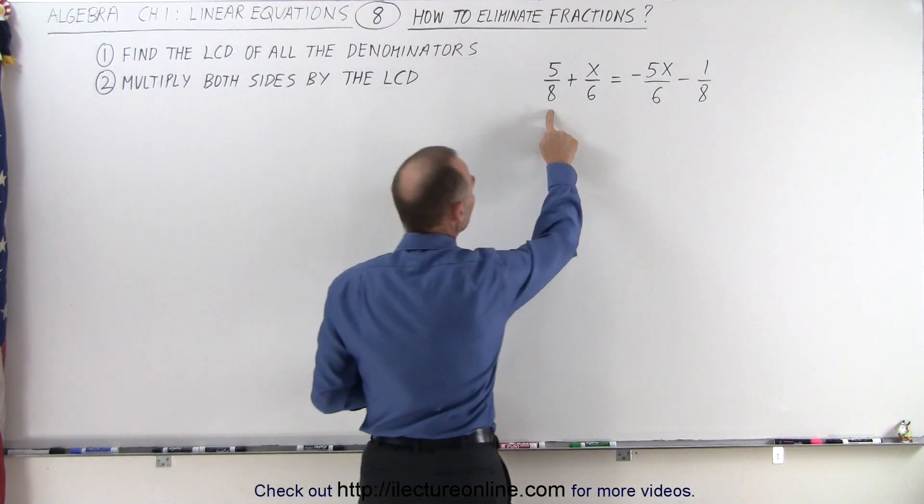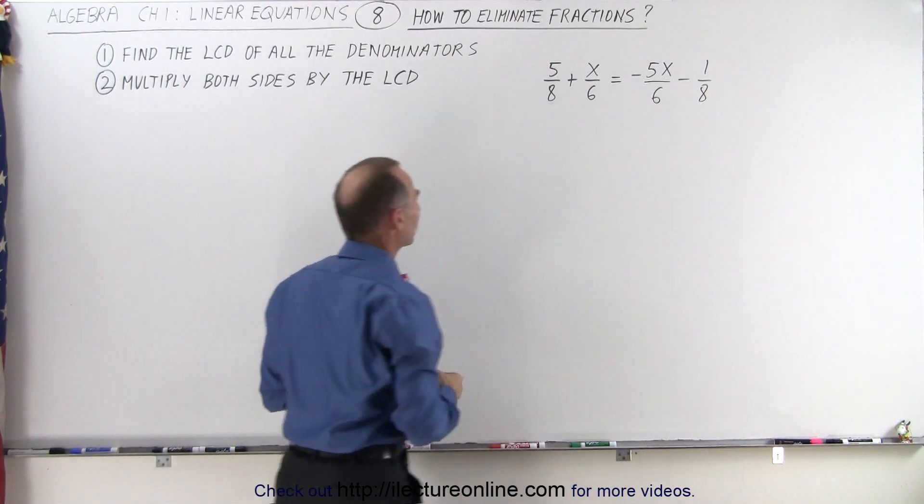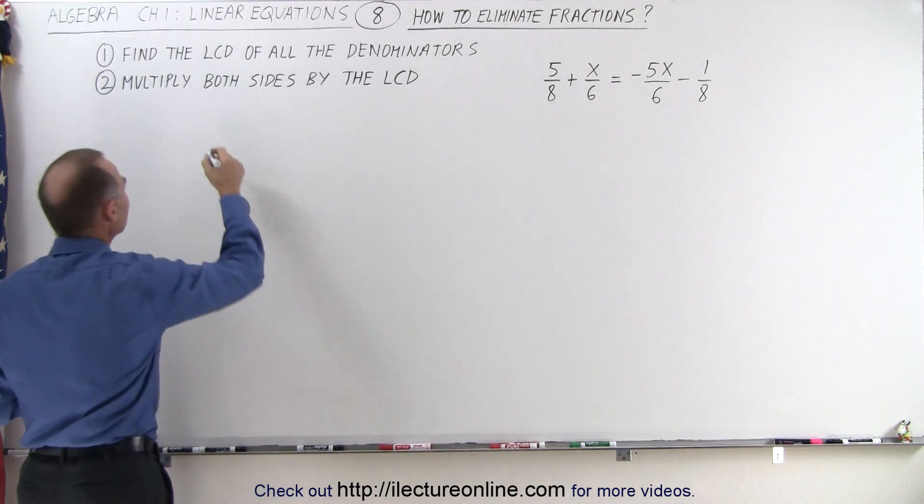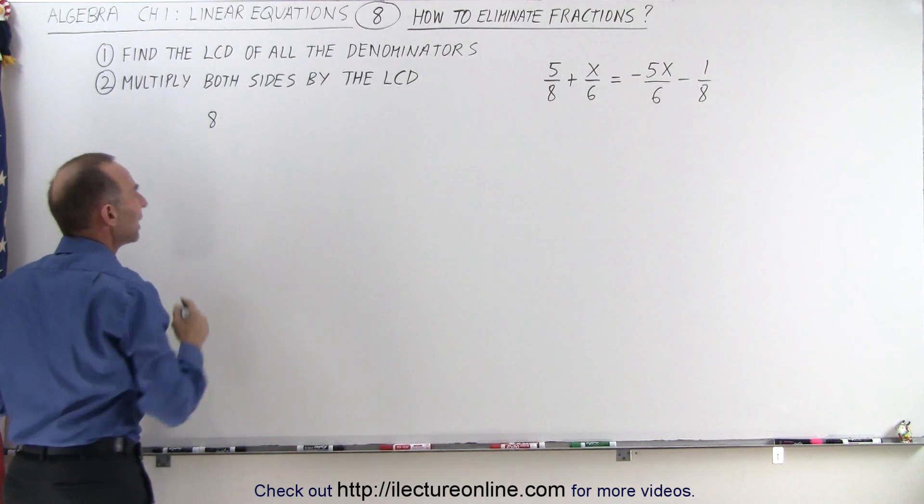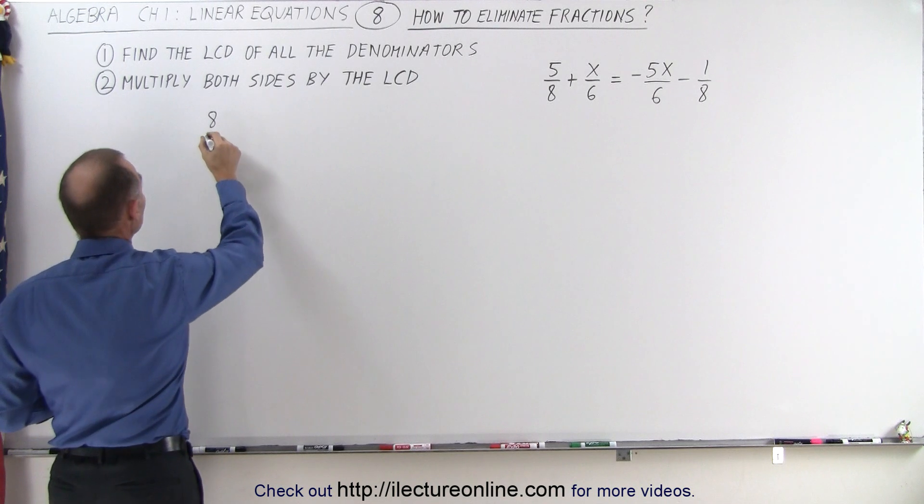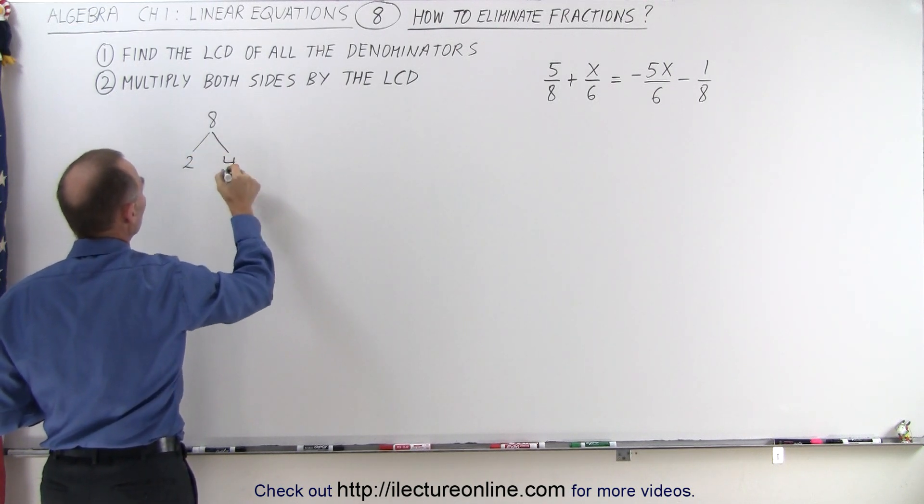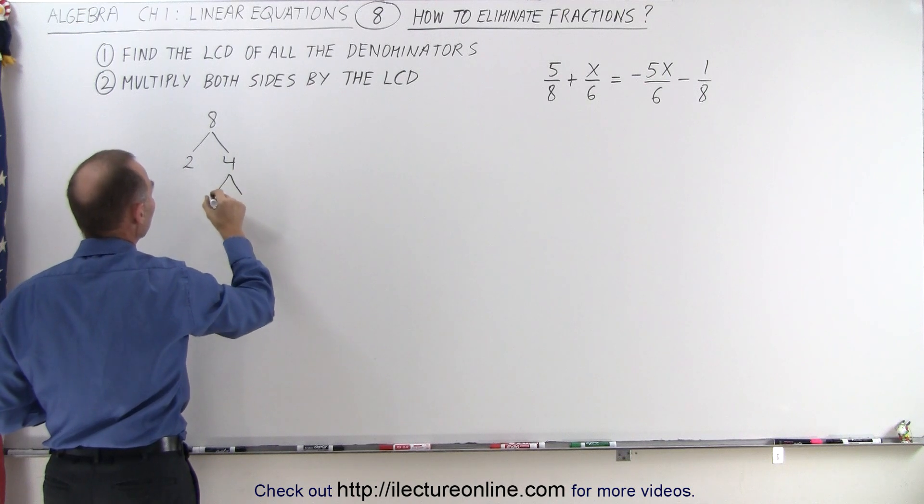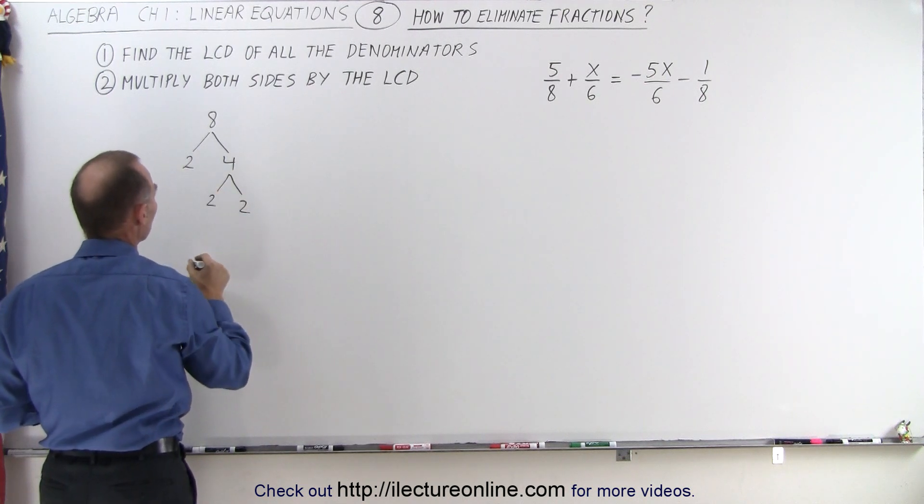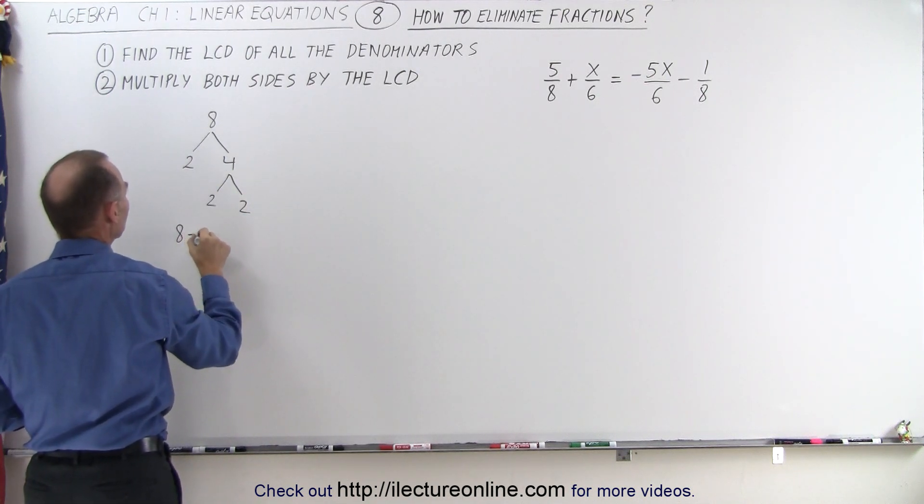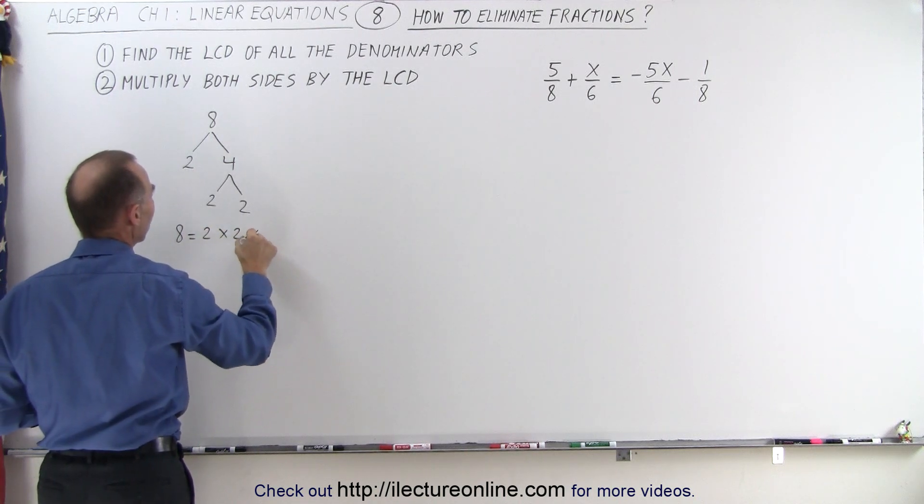Notice we have two denominators, 8 and 6. We're going to take each of the denominators and write it as a product of its factors. So 8 can be divided by 2, we end up with 2 times 4, and 4 can also be divided by 2, so we get 2 times 2. Essentially, 8 is equal to 2 times 2 times 2.